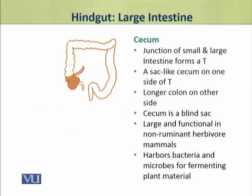The junction of small and large intestine forms a T. At this junction, on one side of the T is a sac-like cecum, and on the other side there is a longer colon. Cecum is a blind sac, which is not open on the other side.